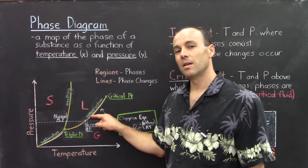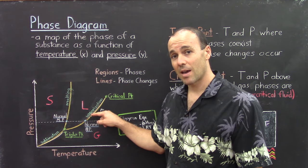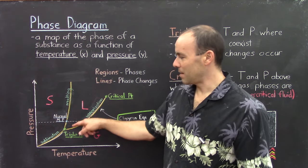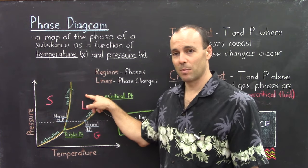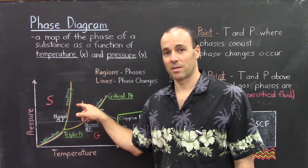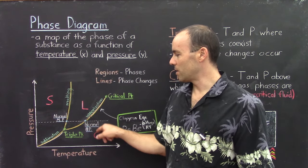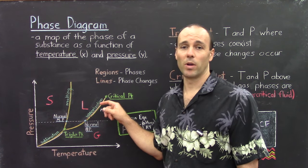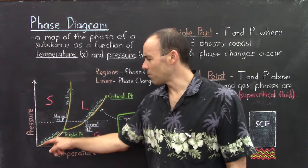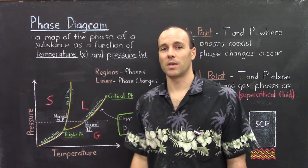The lines that separate the phases represent phase transitions — they represent where the phases are in equilibrium with each other. The line separating the solid from the liquid phase is called the melting curve, or the freezing curve. The line where liquid is in equilibrium with gas is called the vaporization curve, or the boiling curve, or perhaps the condensation curve. And the line separating solid from the gas phase, down at low pressures and temperatures, is called the sublimation curve, or the deposition curve.